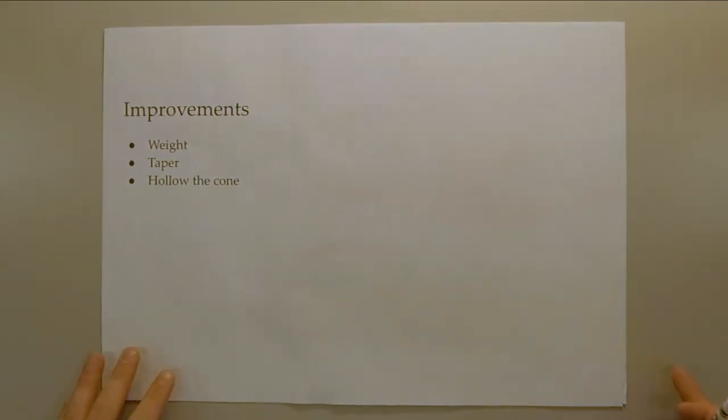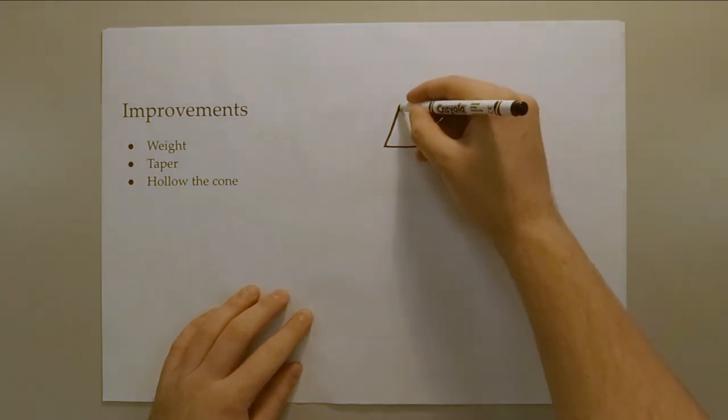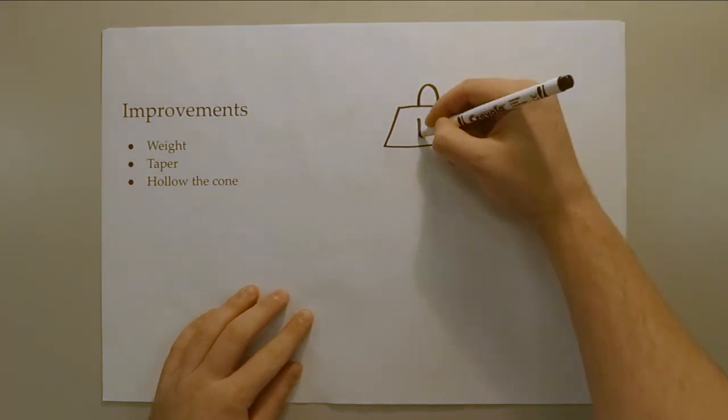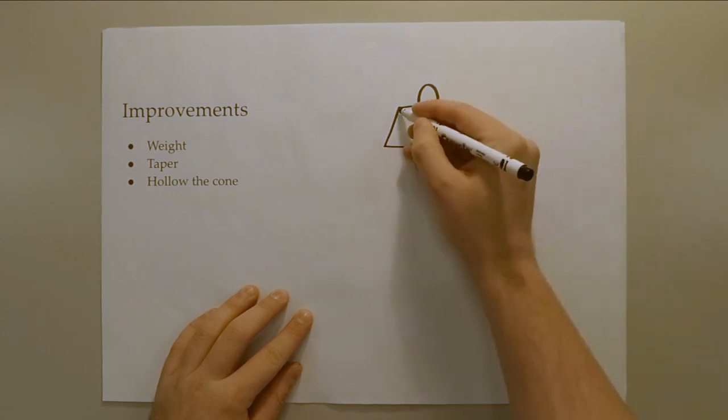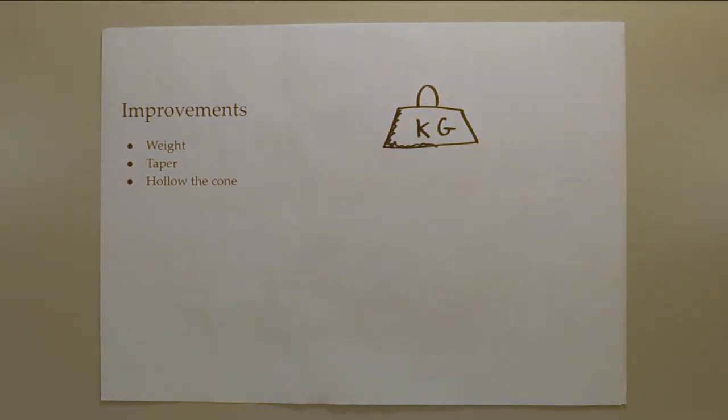There are several areas where we could improve if we were to do it again. Firstly, the turbine was only 145 grams, 55 grams inside the weight limit. This is far too conservative, and by designing the turbine to be closer to the 200 gram weight limit, the blades could have been made longer in order to increase the power it produces.